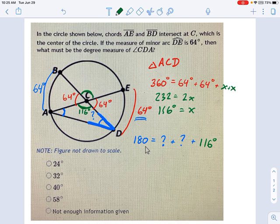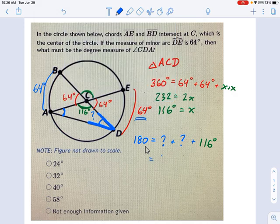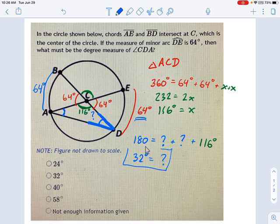Now we pull out the calculator again. We're going to say 180 minus 116, divide that by 2, and that gives us this. That tells us that this angle here that we were looking for is 32 degrees. So there we have our answer.